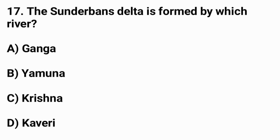Question number seventeen: The Sundarbans delta is formed by which river? The right answer is option A — Ganga.